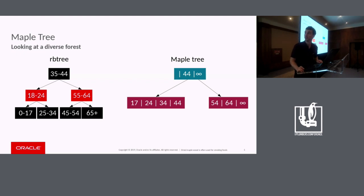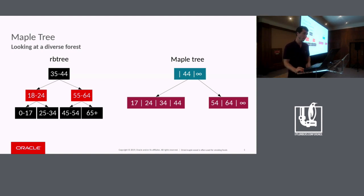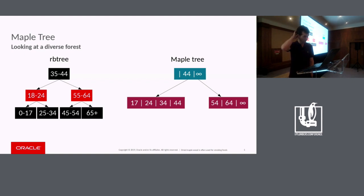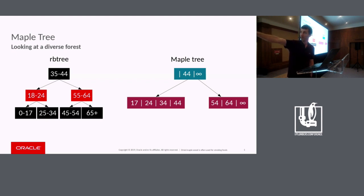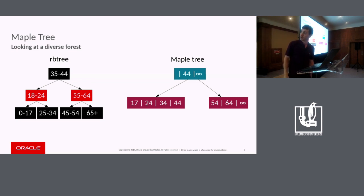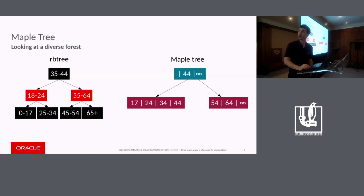Here's an example of the rbtree and the maple tree, each with seven ranges. The maple tree shown is half-sized nodes because we could actually fit all of this in one node. If you look at the average dereferences of an rbtree, it goes from one — if you have 35 to 44 — or two if you go to the second level, or three. The maple tree will always have two in this scenario. In the ideal rbtree, you could have a better best case, but on average it's worse in dereference counts.